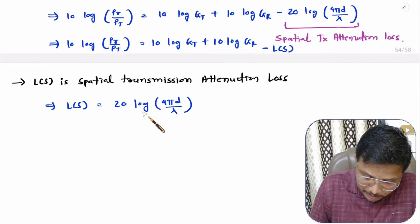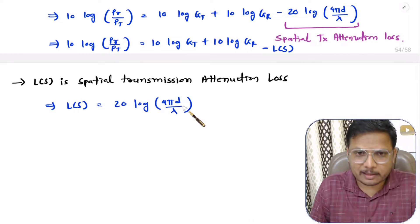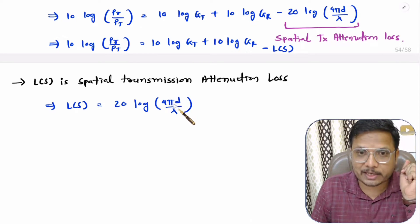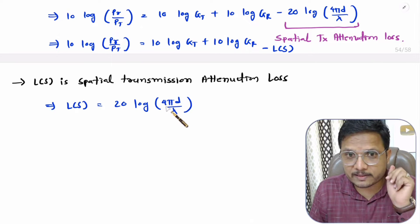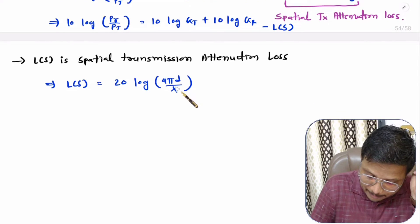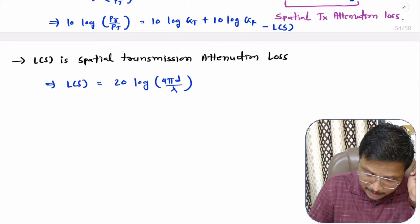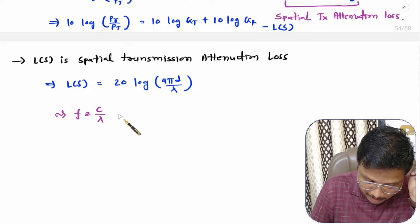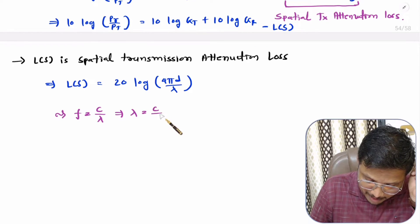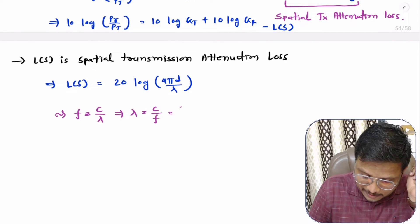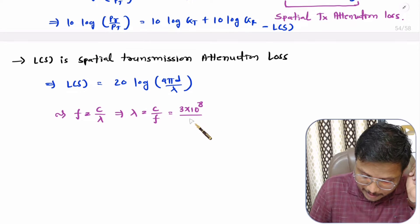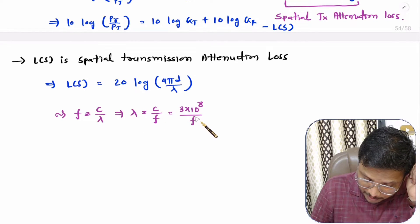Now we need to represent this equation in a simplified version in terms of frequency. One should know that λ has a relation with frequency: f equals c divided by λ, so λ equals c divided by f, where the value of c is 3 × 10⁸ meters per second. So we can represent λ in terms of frequency.